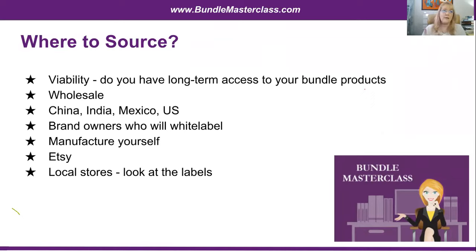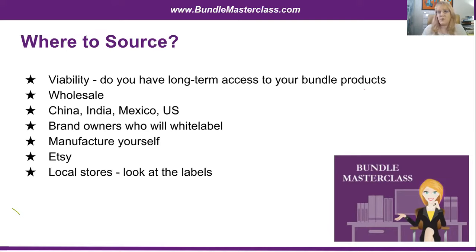Look for viability — do you have long-term access to the products you're putting in your bundle? When you do a closeout, I try to buy everything that liquidator has — 2,000 to 3,000 products — so that I have longevity in that bundle. If they only have a hundred products, I've done all this work and after a hundred units I can't get that main product anymore. So I look for products with long-term viability. Wholesale sourcing from China, India, Mexico, Thailand — there's also Alibaba, Aliexpress, and made-in-india.com. All you have to do is Google wholesale for your niche market and see what comes up.